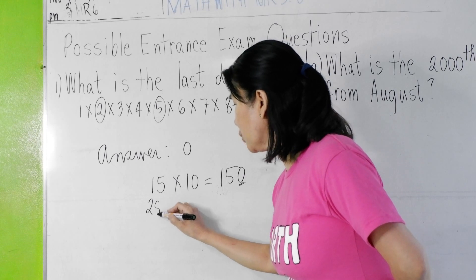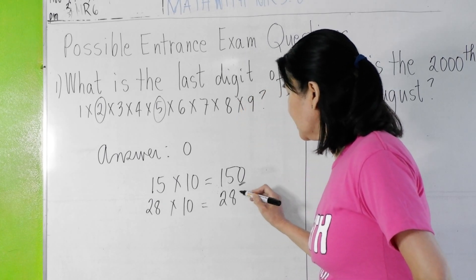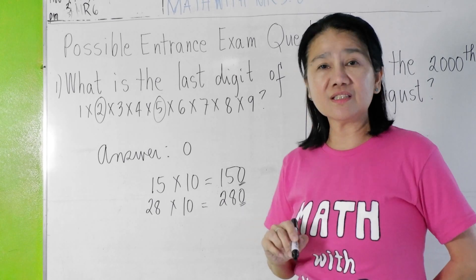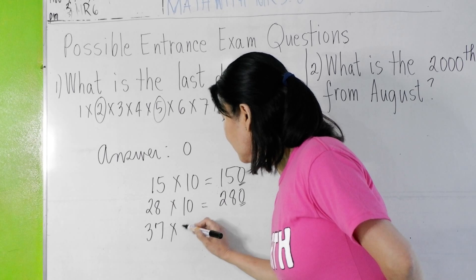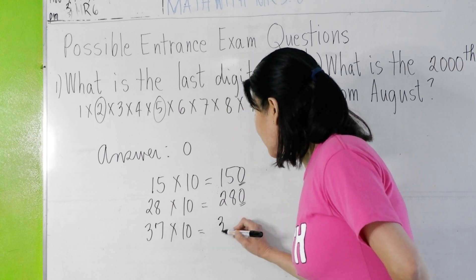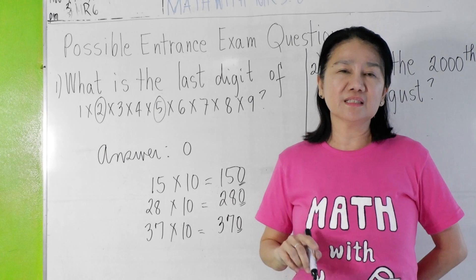Like, for example, if you have here 28 times 10, this gives you 280. The last digit is 0. Another example, if you have here 37 times 10, the answer is 370. So the last digit is always 0.